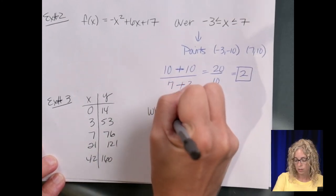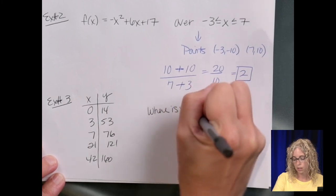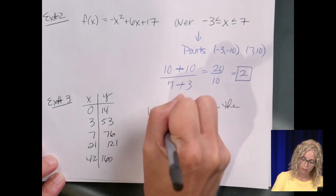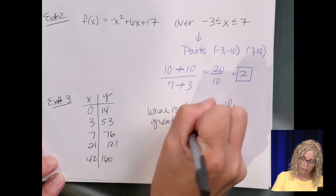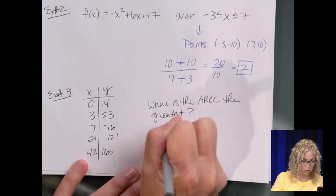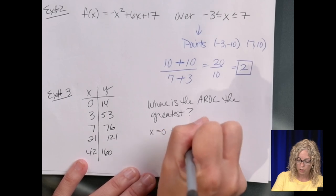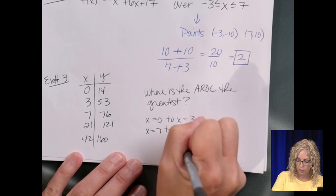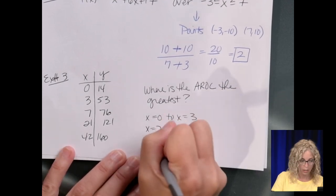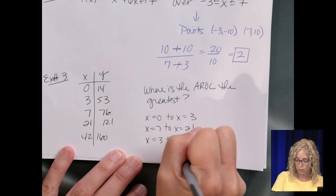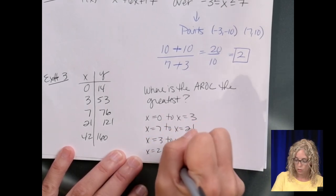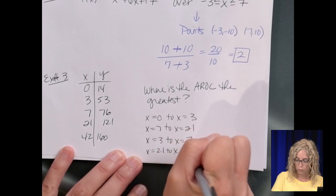So where it says, is the average rate of change the greatest. And your answer choices are, from x equals 0 to x equals 3, second, x equals 7 to x equals 21, then x equals 3 to x equals 7, and then x equals 21 to x equals 42.